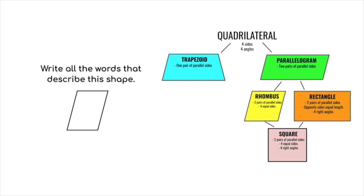Let's try another. We look for parallel sides: this side is parallel to this side — that's one set — and this side is parallel to that side, giving us two sets. So it is a parallelogram. Checking for rhombus, the opposite sides are equal but all four sides are not equal, so it is not a rhombus. The angles are not right angles, so it is not a rectangle, and therefore not a square. This shape is a parallelogram.